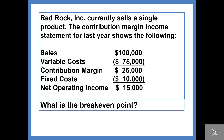We can see that sales are $100,000, variable cost $75,000, contribution margin $25,000, fixed cost $10,000, leaving net operating income of $15,000.